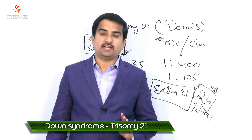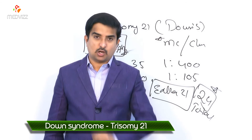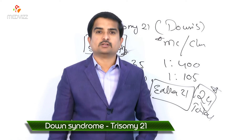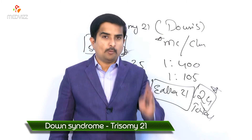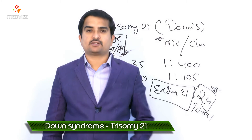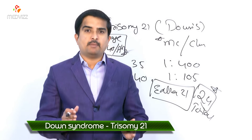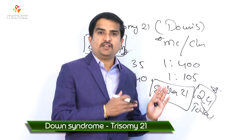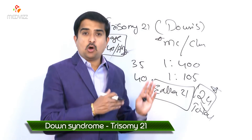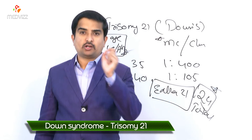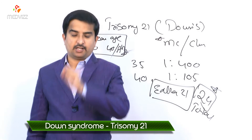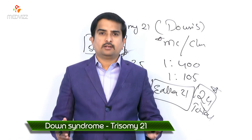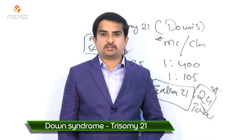Physical findings in Down syndrome include a flat nasal bridge, oblique eye fissures, single palmar crease, and a short webbed neck — all important diagnostic features.